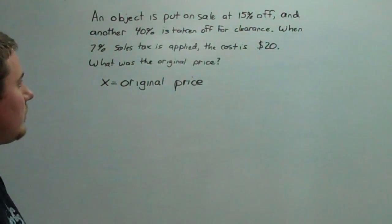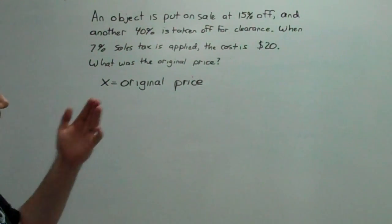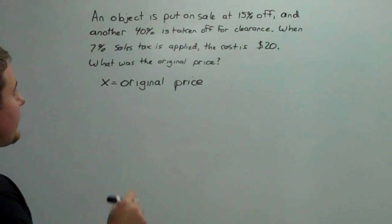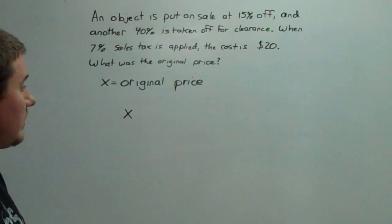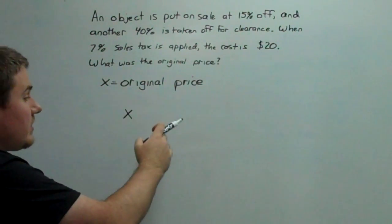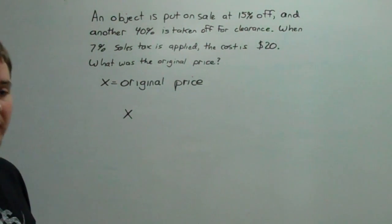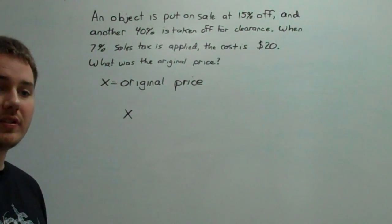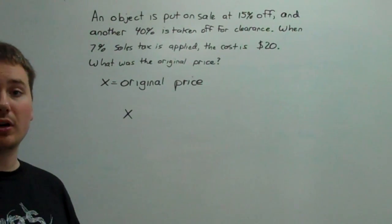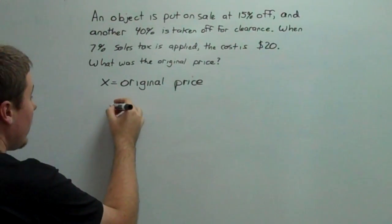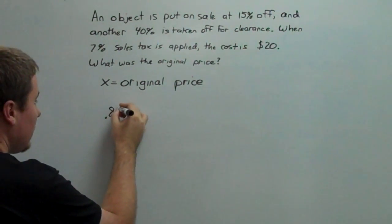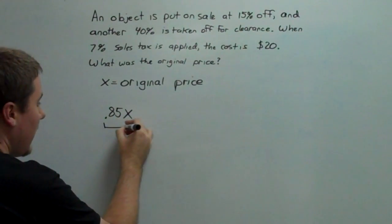Then we're going to use what we know about marking things up and putting them on sale to the original price and set it equal to $20. So when something is put on sale at 15% and x is the original price, you could say x minus 15% of x. But another way to think of it is that losing 15% means that you've got 85% left over. And that's much easier for us to calculate with. So I'm going to say 0.85x, and this is after the first sale.